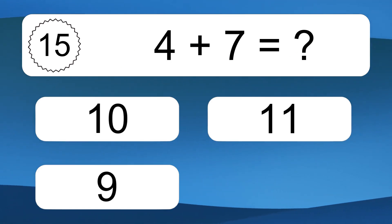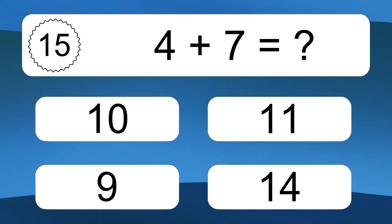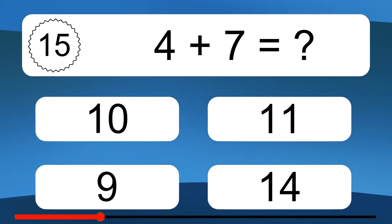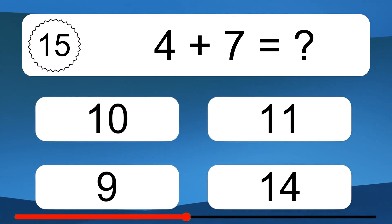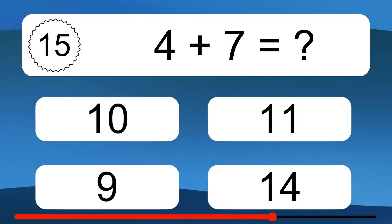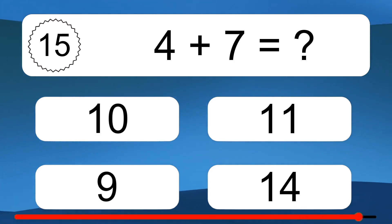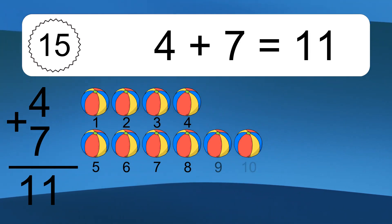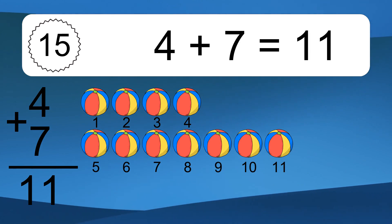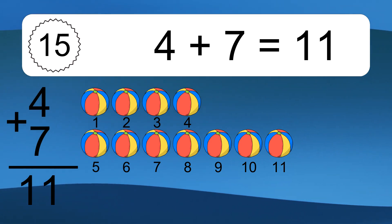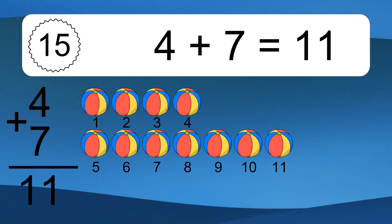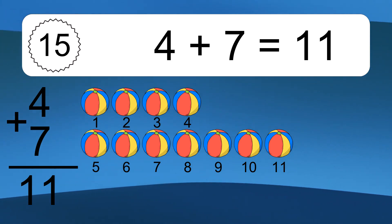4 plus 7 equals what? 4 plus 7 equals 11. Let's count it. 1, 2, 3, 4, 5, 6, 7, 8, 9, 10, 11.